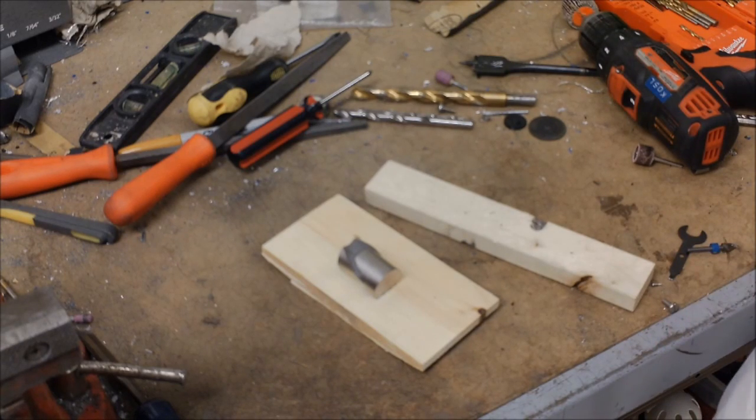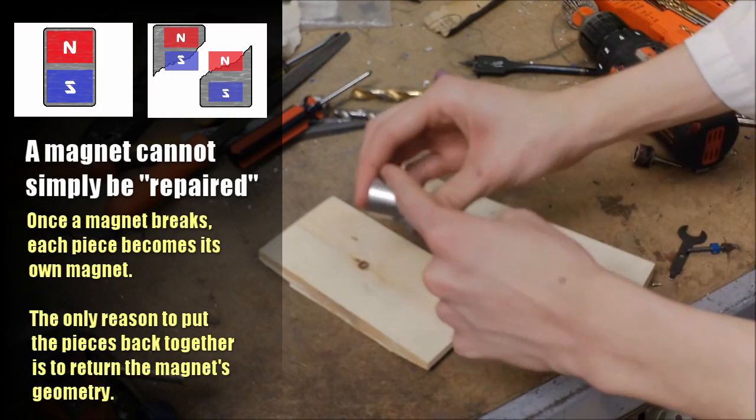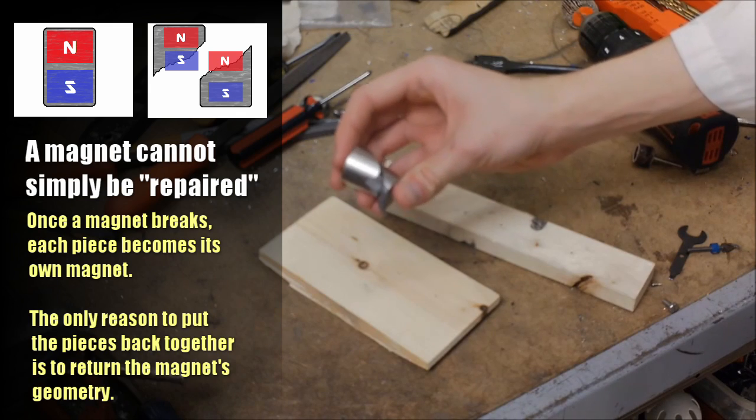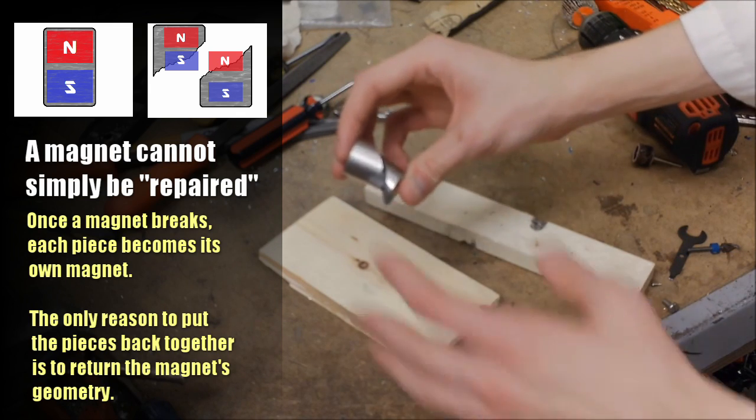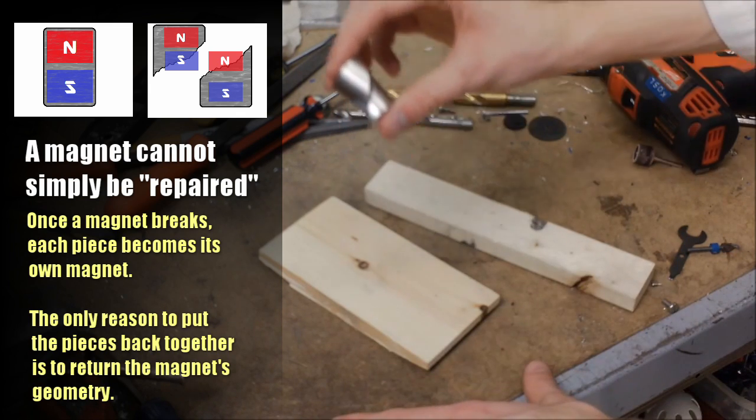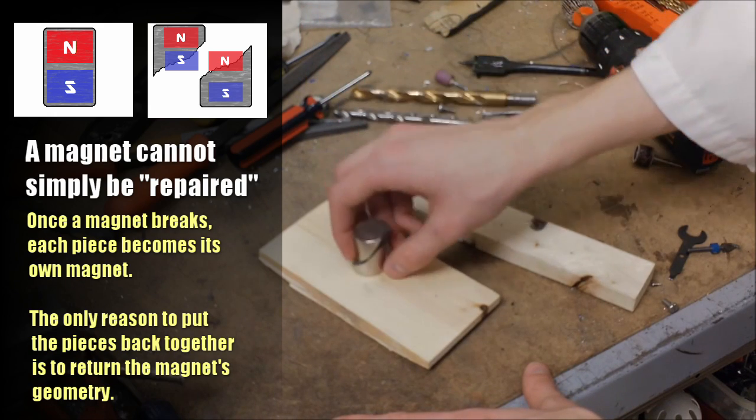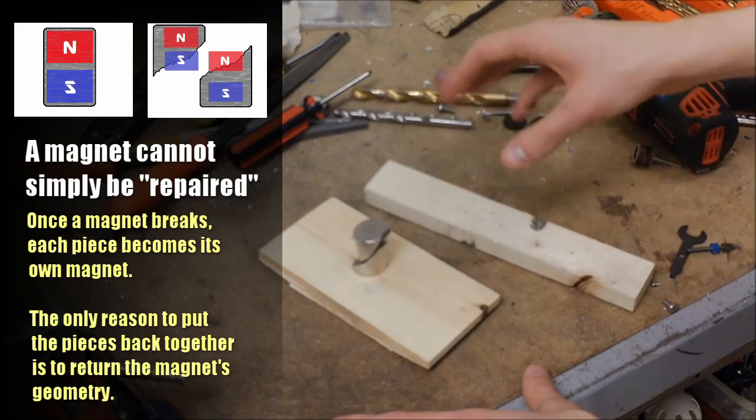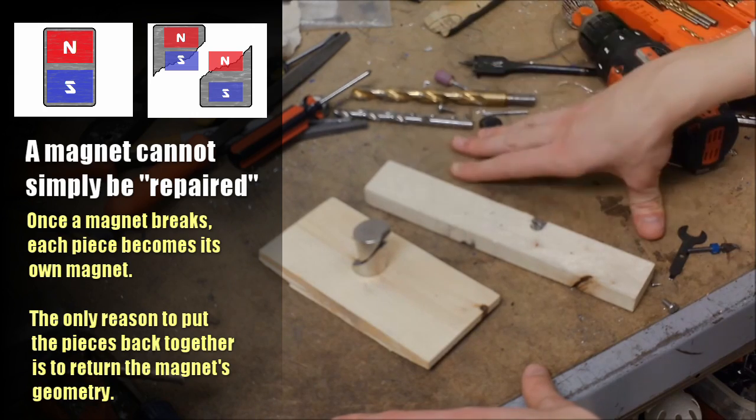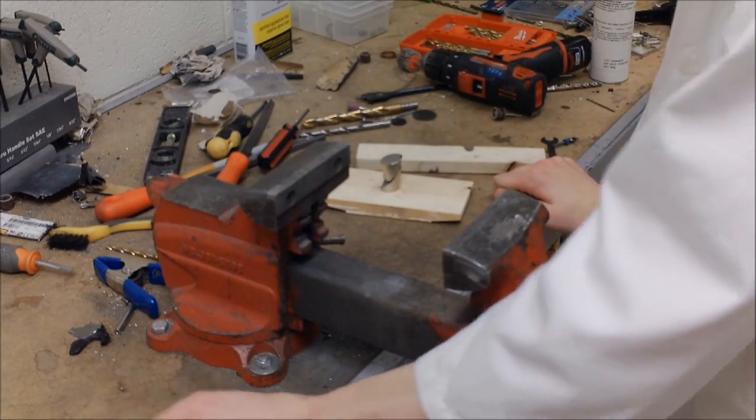I could try and repair it. But once you get this crack through a magnet, it'll never be the same magnet again. You can never get those shards to realign unless you melted it down and reconstructed it. And I don't have the time to do that. I only have the time to do something that's not gonna work. So here's my genius plan.